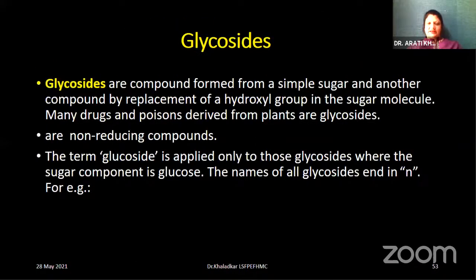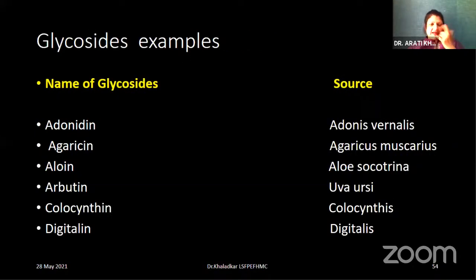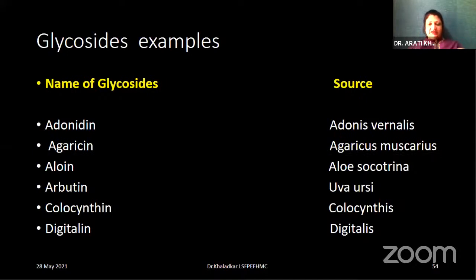Next, we have glycosides — compounds formed from simple sugars, with replacement of the hydroxyl group with a sugar. Remember: they are non-reducing compounds. Examples of glycosides: adonidine, prepared from Adonis vernalis; agaricin, prepared from Agaricus muscarius; aloein, prepared from Aloes socotrina; arbutin, prepared from Uva ursi; colocynthin, a type of glycoside found in the bitter cucumber — Colocynthis; and last but not least, digitalin — from Digitalis purpurea.